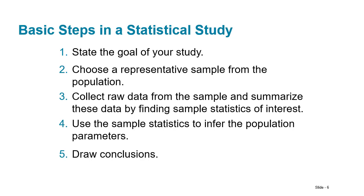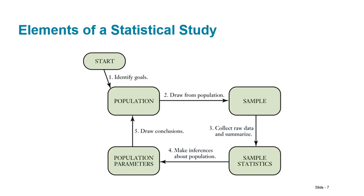You use those sample statistics to make inferences — educated guesses about the population parameters, i.e., the same measurements but from the population. Then you draw conclusions based on your results. So: identify your goals, identify the population, take a sample, collect data and run statistics, make inferences about the population, determine what you think the population parameters are, and draw conclusions.